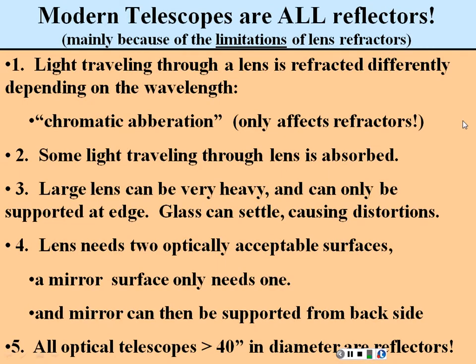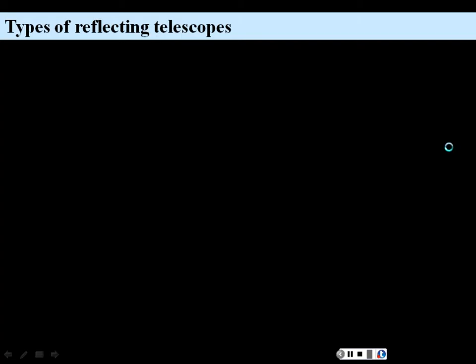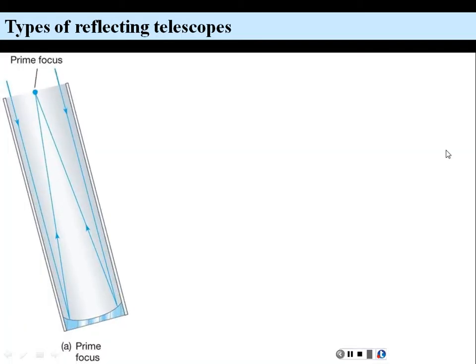All optical telescopes for scientific use greater than 40 inches — more than a meter in diameter — are reflectors in modern day. Let's look at some reflecting telescope designs. The first and simplest is the prime focus reflector, where light comes in, reflects off a concave mirror, and focuses to a prime focus where it is collected.